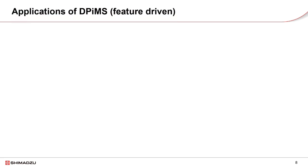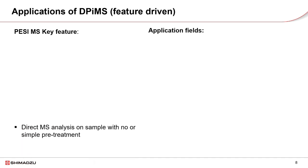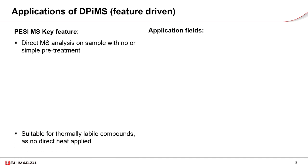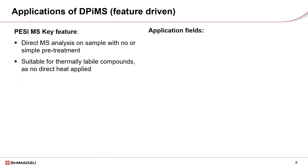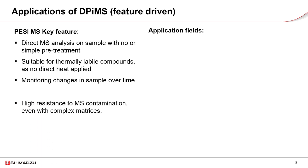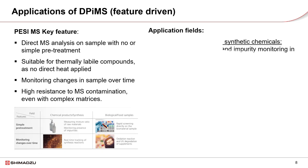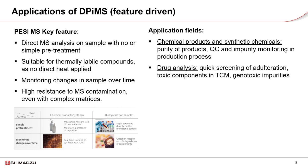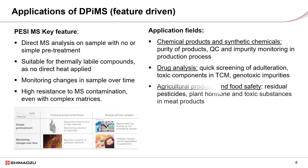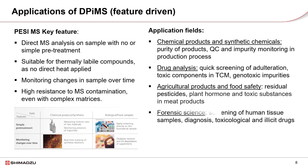Applications of DPI-MS are driven by its key features. Since no or simple sample pre-treatment is required, analysis is fast and easy, suitable for monitoring composition changes over time. With no heating during ionization, DPI-MS is suitable for thermally labile compounds. Sampling at the picoliter level minimizes contamination, making DPI-MS a robust solution for high-complexity matrices such as blood, urine, or food samples.